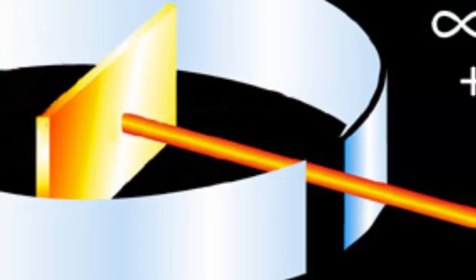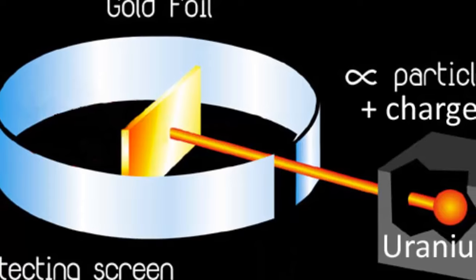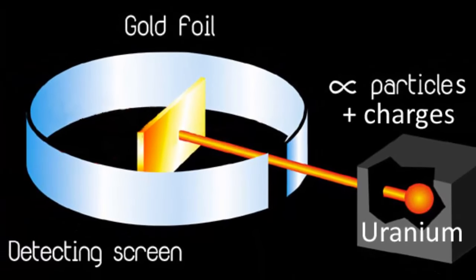Rutherford used these alpha particles as atomic bullets and fired them at a very thin sheet of gold that was only about a thousand atoms thick. On the opposite side to the uranium source, he placed a scintillation screen that lit up when particles hit it, so he could then measure where the alpha particles landed. If the gold atoms were like billiard balls, then the alpha particles would be blocked and none would arrive at the screen.